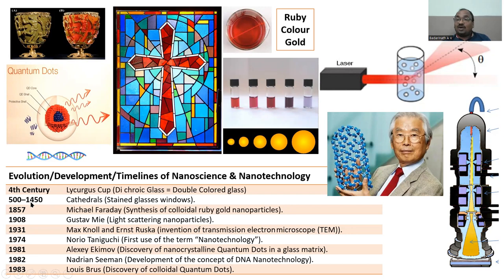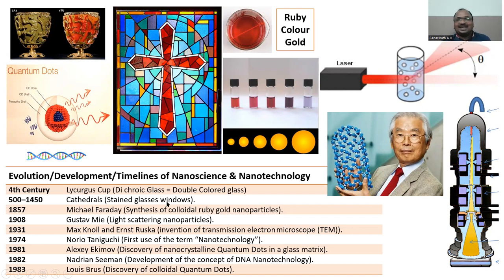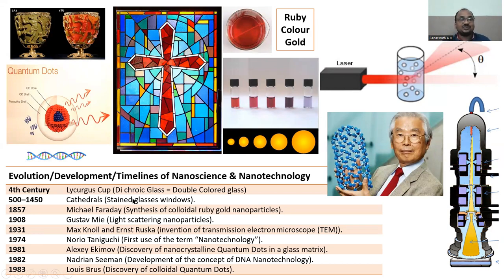Next is 500 to 1450 — Cathedral church. If you go to a church, you see stained glass windows. This word is important: stained glass window — not a transparent plain window, but a stained window where color stain has been given. That's why this is called stained glass, because this is a nano painting.